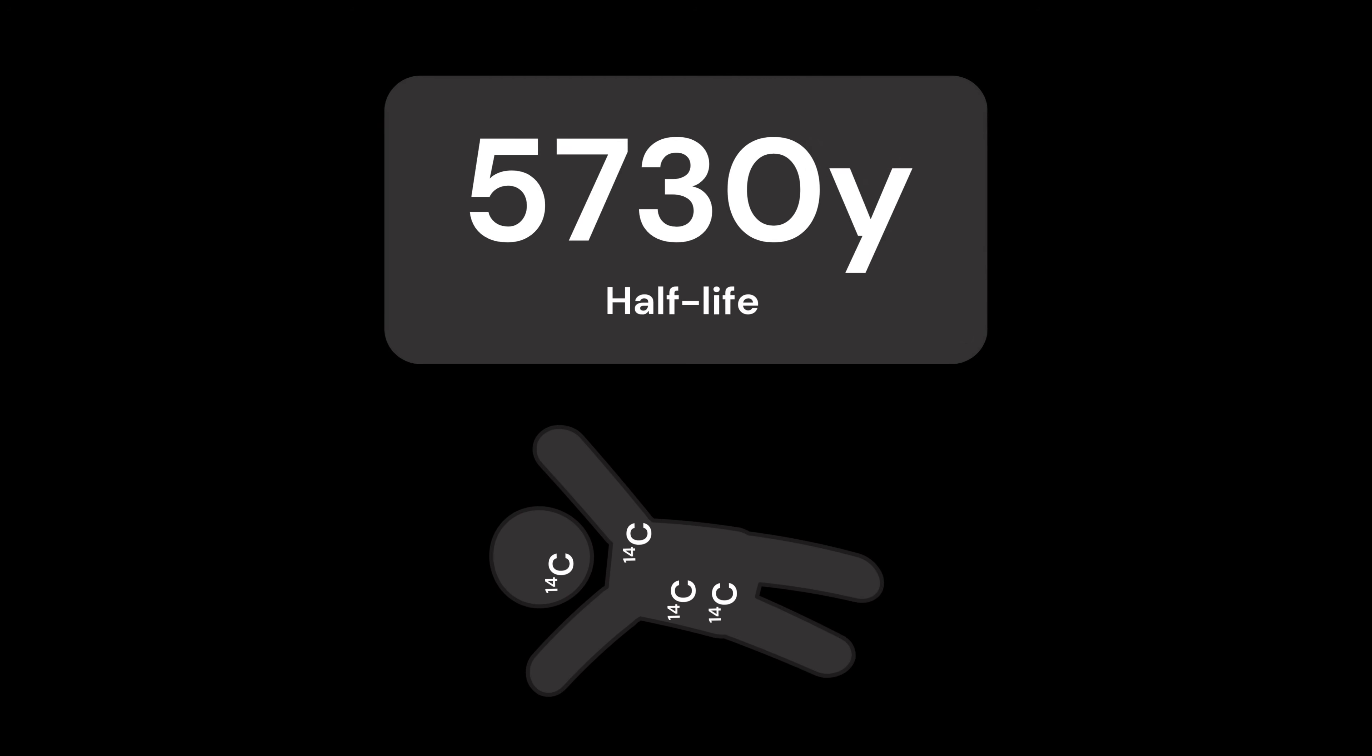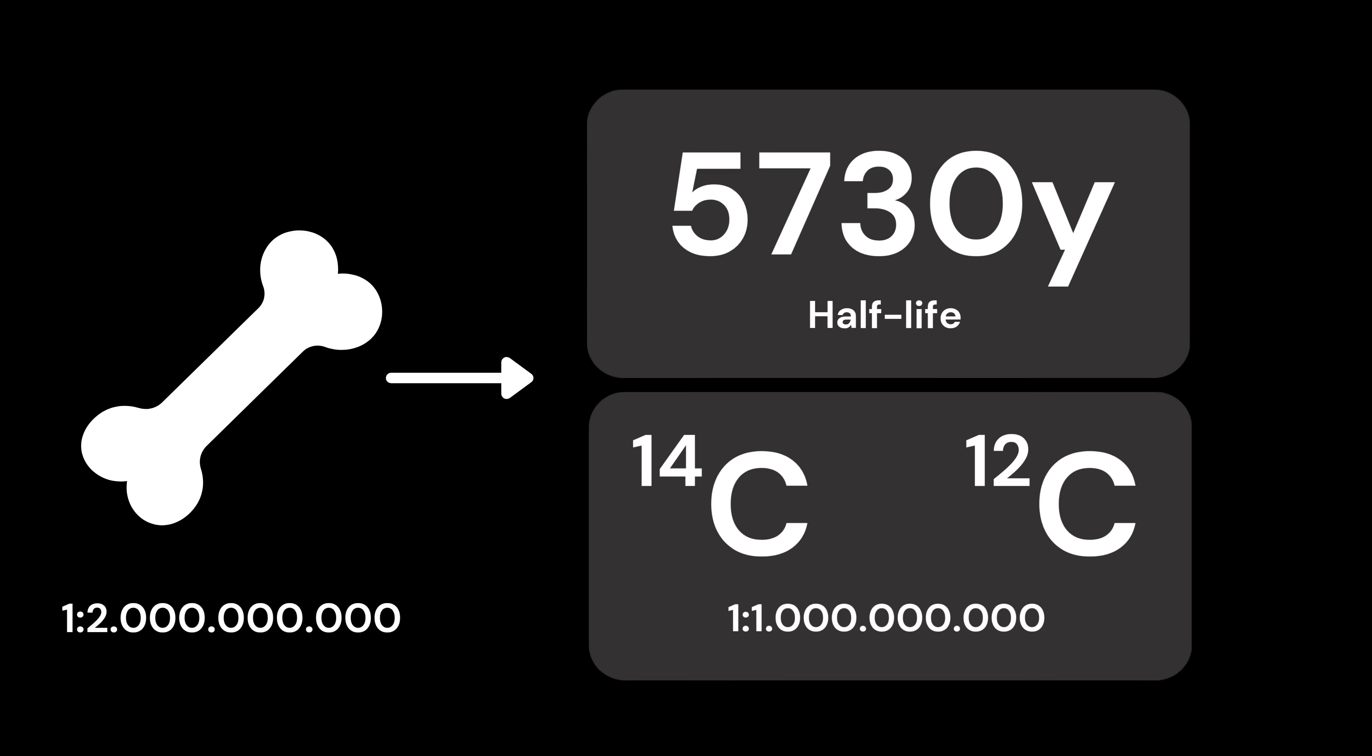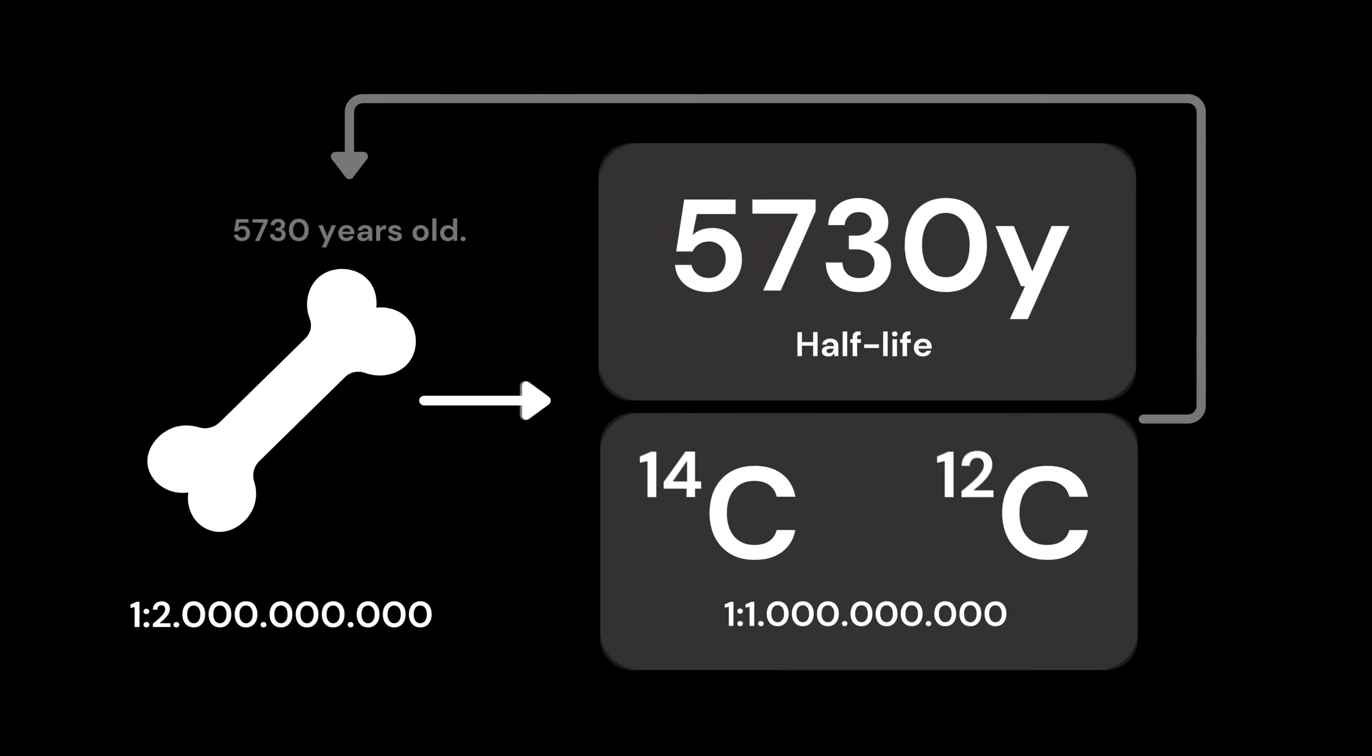The half-life is 5,730 years. Later, for example, by analyzing bones, it is possible to determine the ratio of C14 to C12 today, and then use this formula to determine the age of the organism.